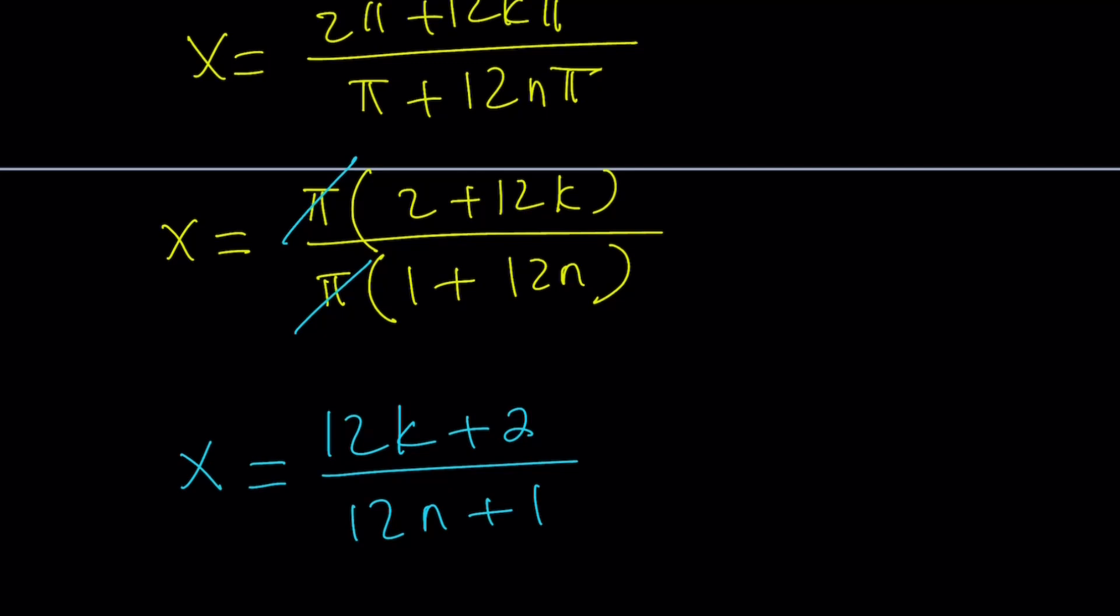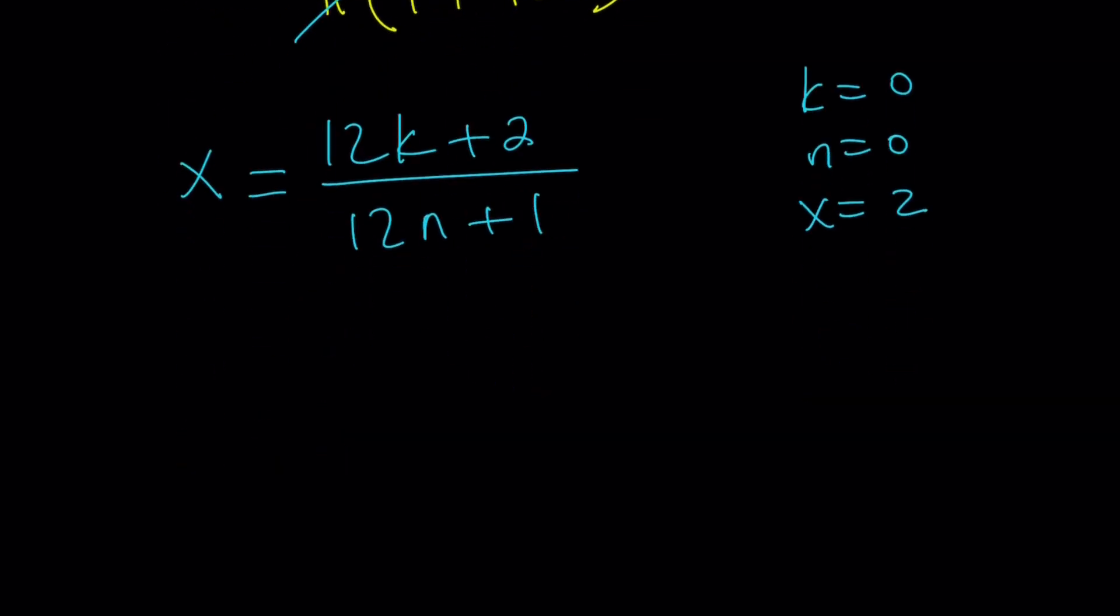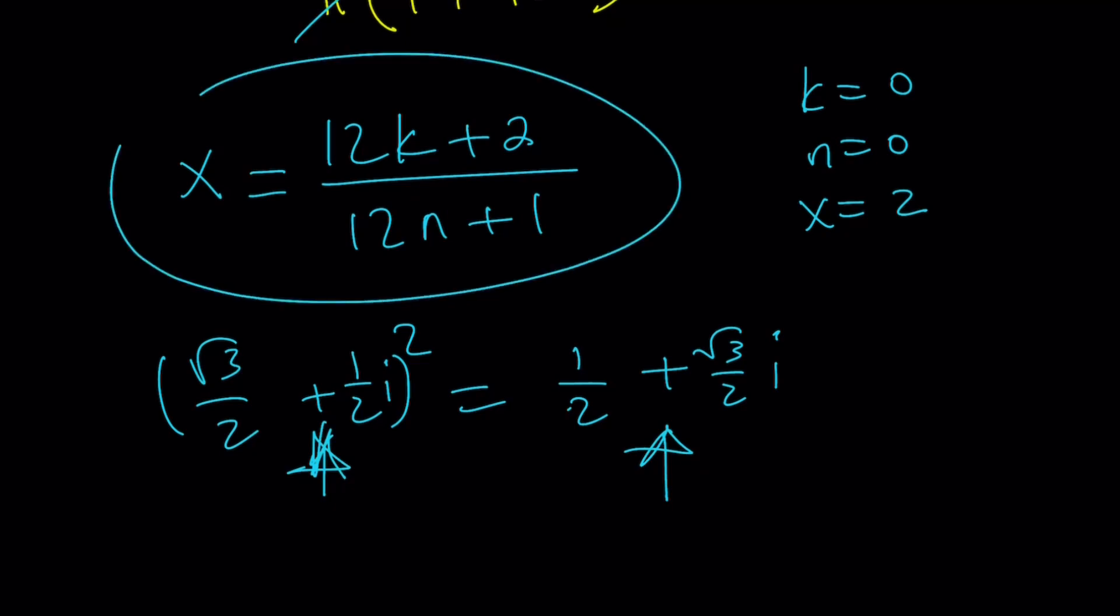For example, if k equals 0 and n equals 0, then you're going to get x equals 2. What does that give you? If you square this number, then you should be getting this number. And you can always check. Just square it and you'll see. And this is also verified by Euler because this is going to be a cosine 30 degree angle and it's going to be a 60 degree angle. But it also means that you can use other values such as, for example, if k equals 1, then x is going to be 14 over, let's say, n equals 1 as well. 14/13 is also going to work.